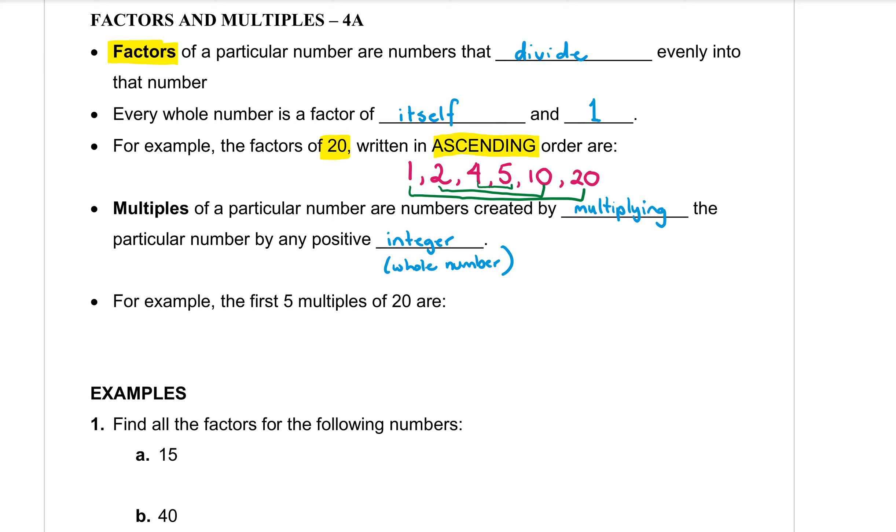Next we want to talk about multiples. The multiples of a particular number are numbers that are created by multiplying the particular number by any positive integer. Now the word integer just means I'm multiplying by another whole number.